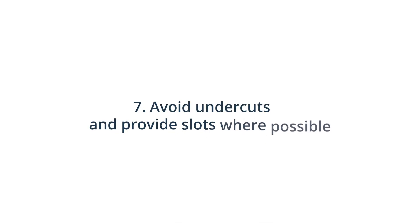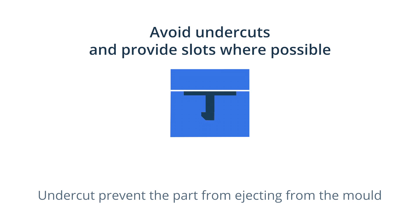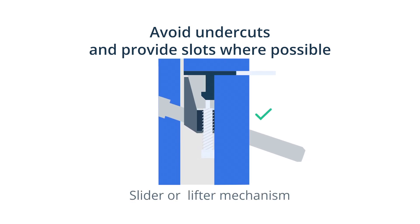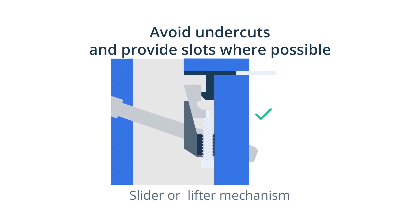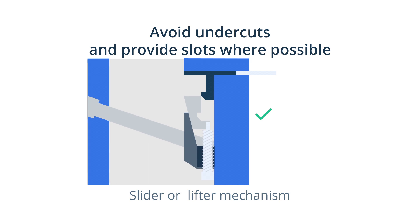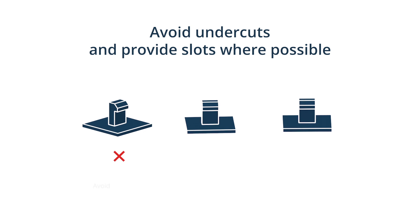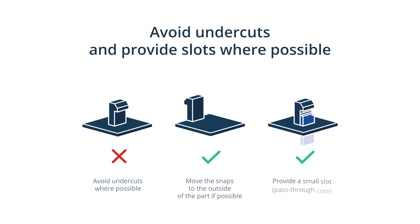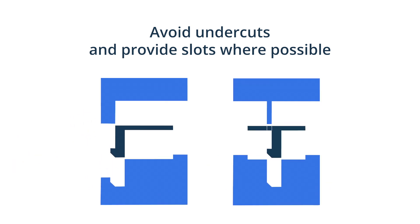Tip 7: Avoid undercuts and provide slots where possible. Complex part geometries and parts with snap fittings have undercuts that prevent the part from ejecting from the mold. Often these undercuts are formed using a mechanism called a slider or lifter — a movable mold part that slides inside once the mold is closed and slides out before it opens. This mechanism adds complexity and increases mold costs. For simple cantilever snaps, you can avoid this expense by moving the snaps to the outside of the part if possible, or by providing a small slot or pass-through core at the base of the cantilever to enable ejection without sticking.